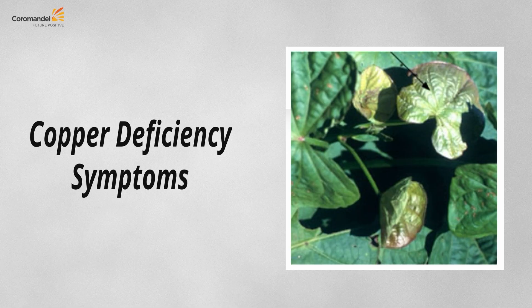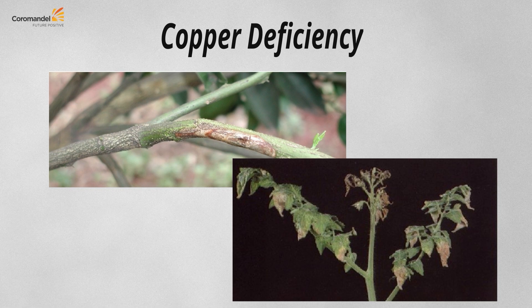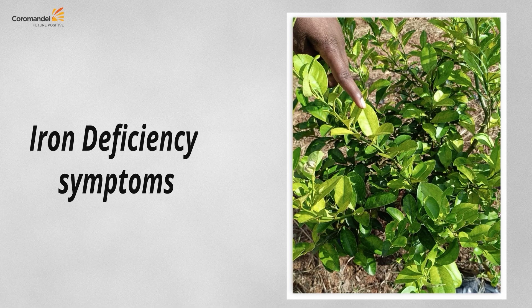Copper deficiency is generally rare since copper-based fungicides are widely applied. However, if deficiency occurs, leaves become pale in color, plants wilt, and when moisture is inadequate the wilting is severe. Fertilization failure and fruit set problems occur, and the leaves show abnormal color and shape. Deficiency symptoms are shown for citrus and tomatoes.